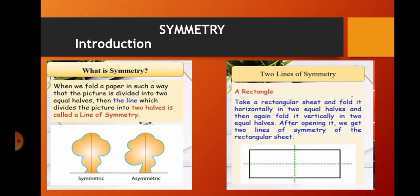Pictures have many lines of symmetry just like a rectangle. Take a rectangle sheet and fold it horizontally into equal halves and then again fold it vertically into equal halves. After opening it, we get two lines of symmetry of the rectangular sheet. So a rectangle has two lines of symmetry.